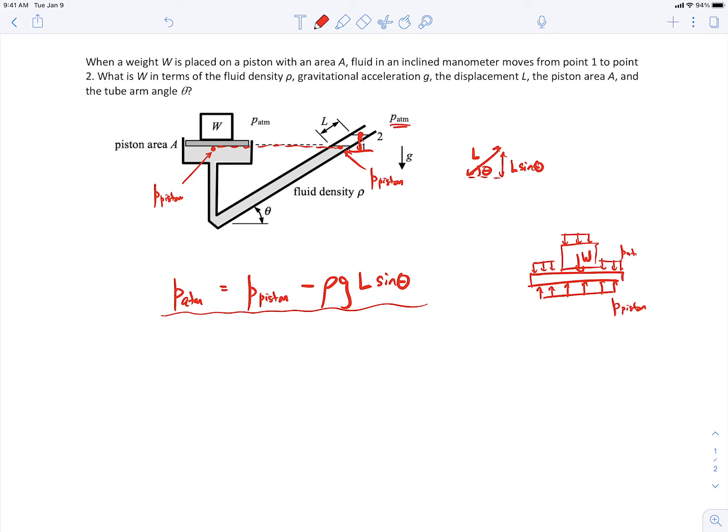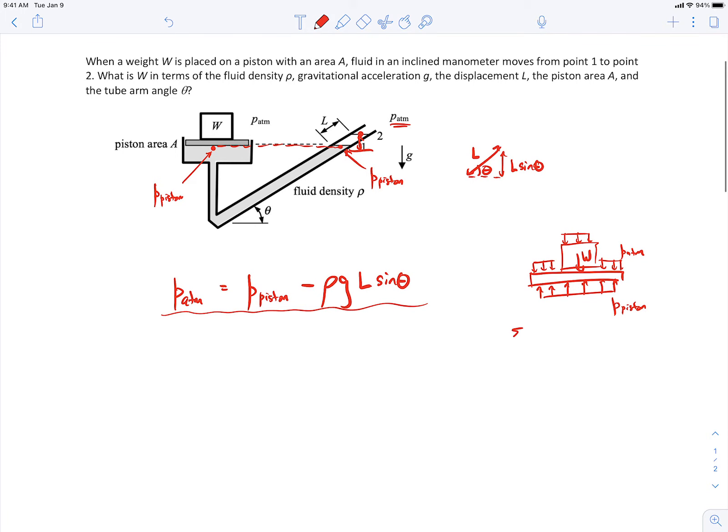So this is all P atmosphere. So if I just sum forces in the vertical direction, set it equal to zero, the force pushing upward would be P piston times the area of the piston, and then the forces pushing down would be W, that's the weight, minus P atmosphere times the same area, A.